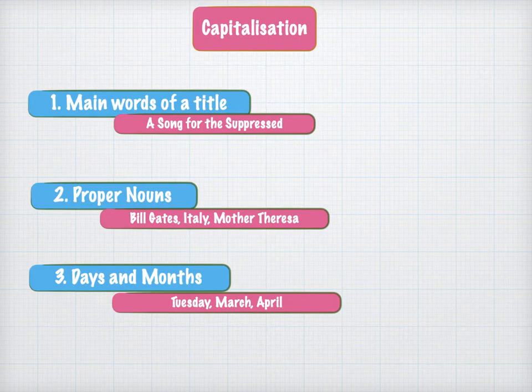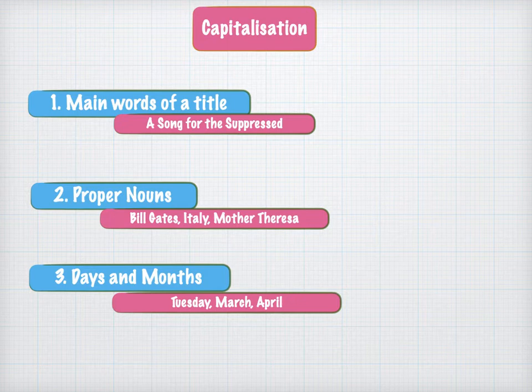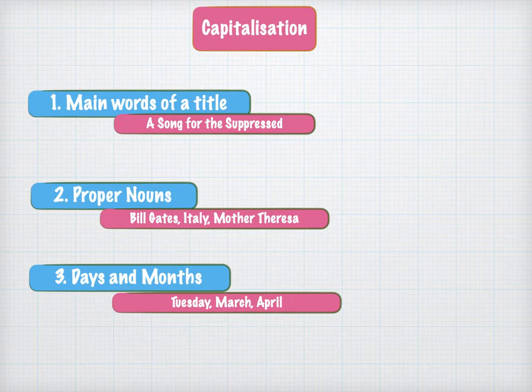Moving on to capitalization. This is straightforward as most students know when it is used. The first situation is as main words of a title — for example, 'A Song for the Suppressed' where S in Song and S in Suppressed are capitalized. The second situation is for proper nouns like Bill Gates, Italy, Mother Teresa, Gandhiji, United Kingdom. The third situation is for days and months: Tuesday, Wednesday, March, April, etc.